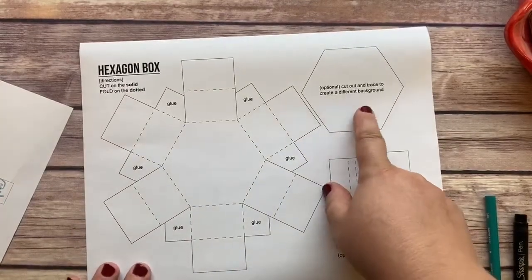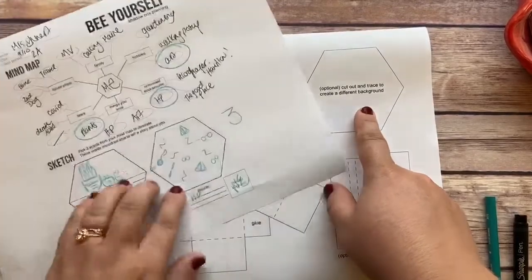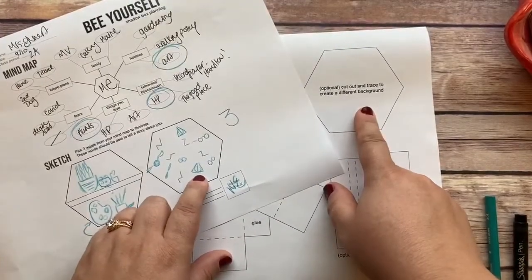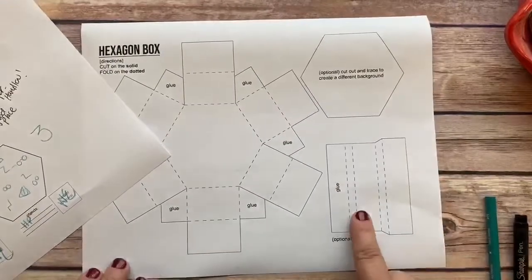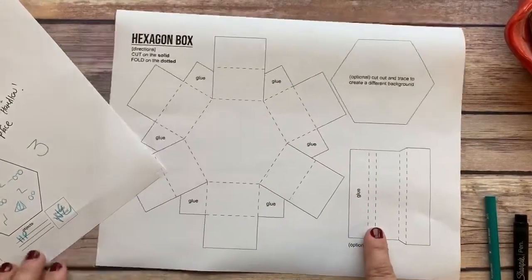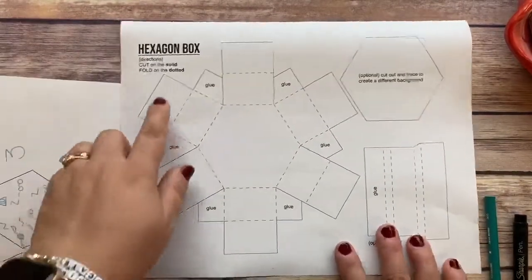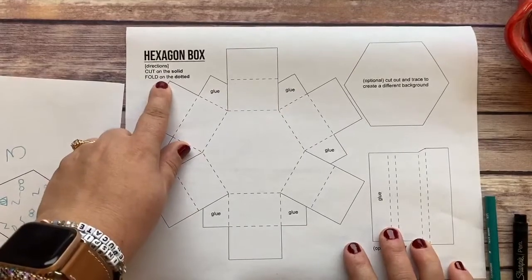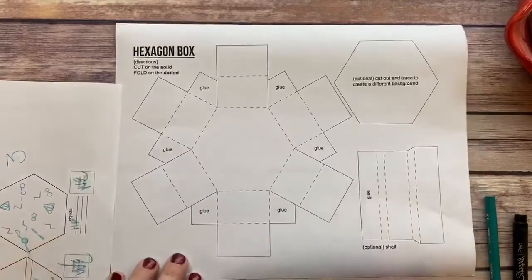I'm going to do a different background like I had shown you here with my Harry Potter themed kind of wallpaper. I am going to put a shelf and you'll see the instructions for where to cut on the solid line and fold on the dotted line on here.